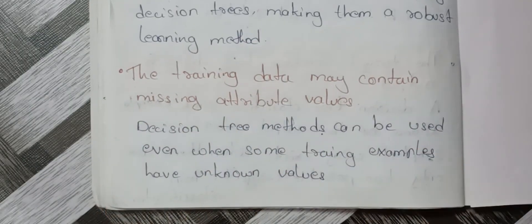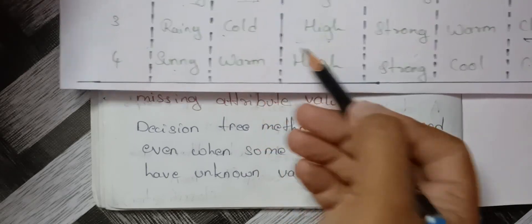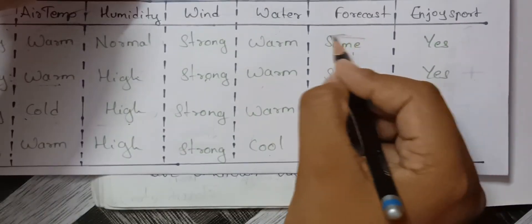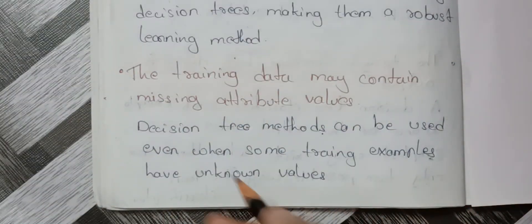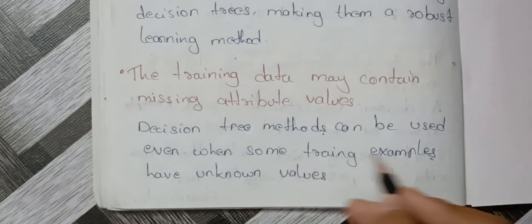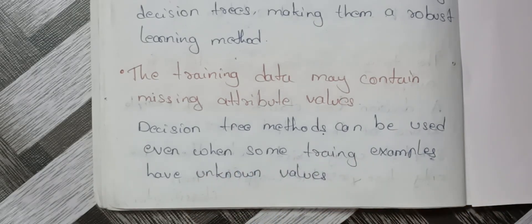Fifth characteristic: training data may contain missing attribute values. For example, some weather attributes like rainy, cold, sunny, or warm might be missing. Decision tree methods can be used even when some training examples have unknown values — they can work well around missing attribute values. So for problems with missing attributes, decision tree is the best solution.